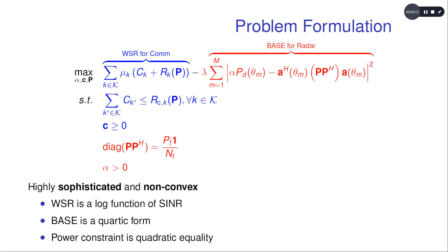Now, after we represent WSR and the metric base for radar, we can formulate the optimization problem by combining these two metrics in the objective function and introducing all the constraints.